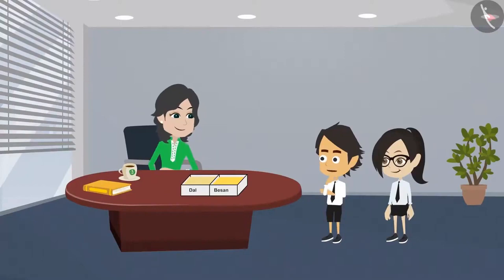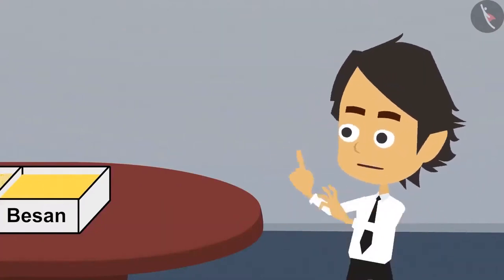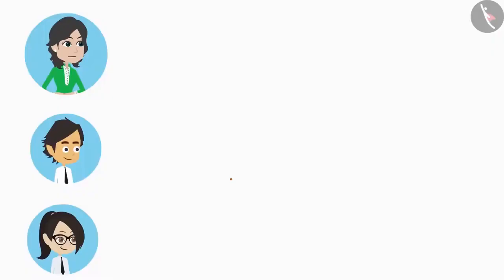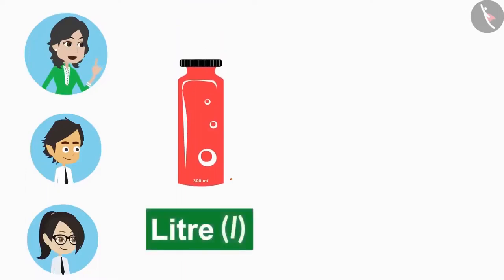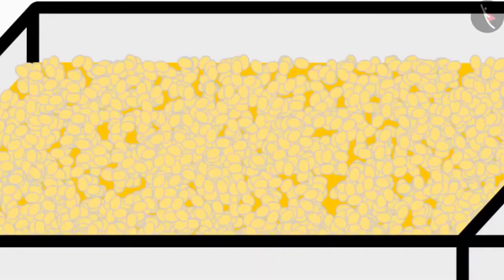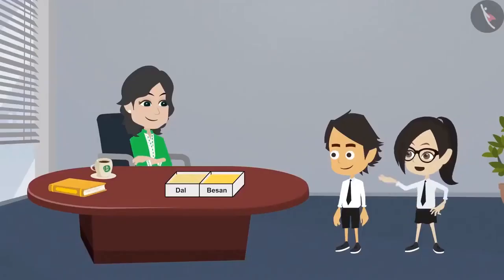This means this is not the way to divide dal into two equal halves. We can neither cut nor count it, and unlike liquid, we cannot measure besan that way either. So how do we divide besan? Just like we use litre to measure liquid, we use gram to measure solid objects. Objects like dal which are not easy to count, and objects like besan that cannot be counted, are measured in grams. After measuring besan in grams, we can divide it into two halves.